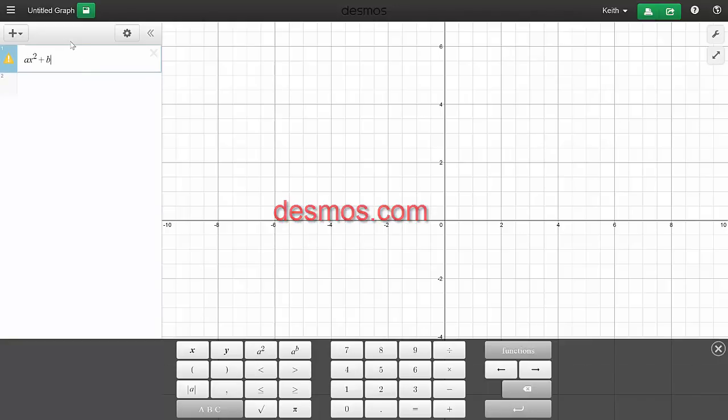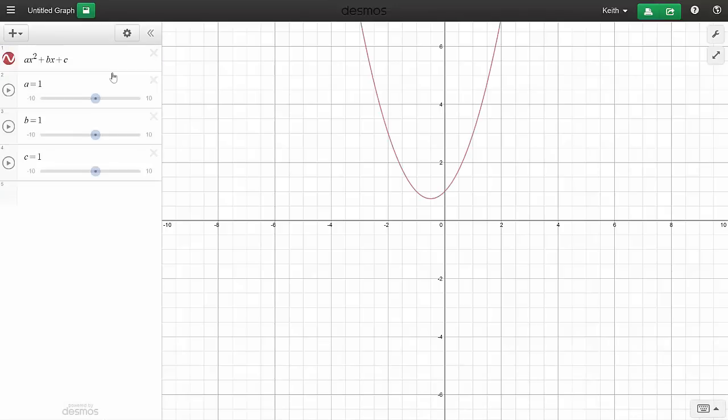I'll input the formula ax squared plus bx plus c. The app knows about x, that's the x-axis. But it doesn't know what values to use for a, b, and c, so it offers to create some sliders for us. I'll accept that offer. And bang, we have a parabola.